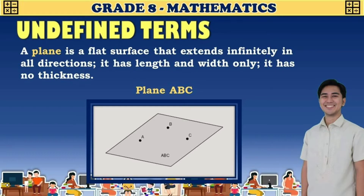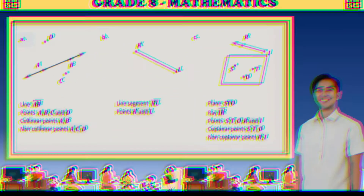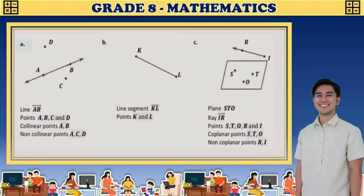Let's look at three illustrations. In letter A, we have line AB and points A, B, C, and D. The collinear points are point A and point B, since they lie on the line. The non-collinear points are point A, point C, and point D.